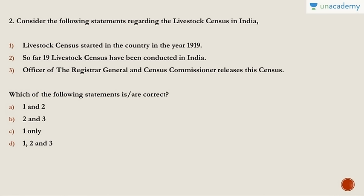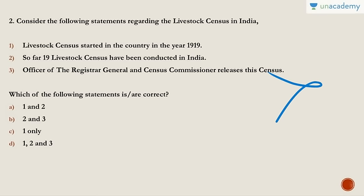Question two: Consider the following statements regarding livestock censuses in India. Livestock censuses started in the country in 1919; so far 19 livestock censuses have been conducted in India; and the Office of the Registrar General and Census Commissioner releases the census. The answer is A — only the first and second are correct. The 19th census took place in 2012 and the 20th will be in 2017, so statement two is correct. However, the Department of Animal Husbandry, Dairying and Fisheries of the Ministry of Agriculture releases the report, so the third statement is wrong.